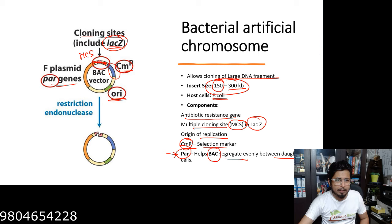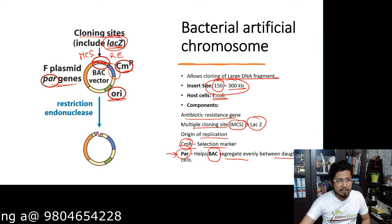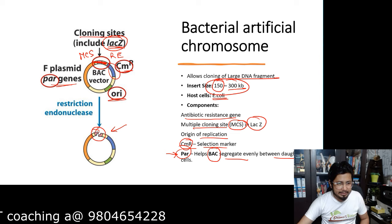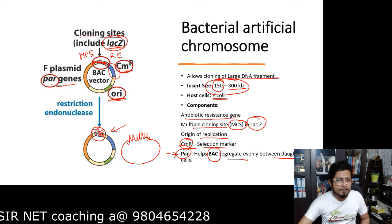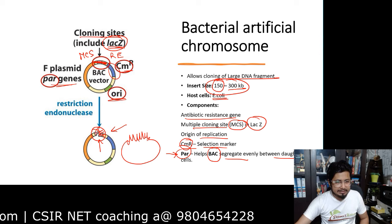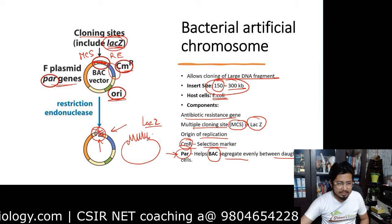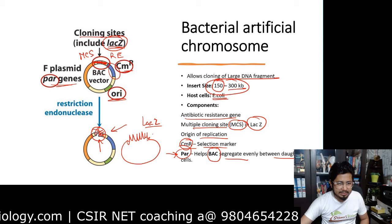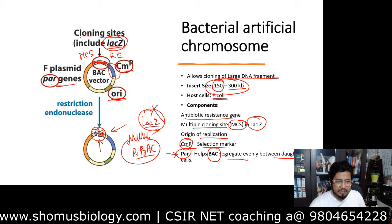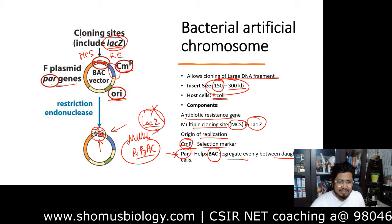At the Multiple Cloning Site, we use a restriction endonuclease to cleave the MCS, and then the target DNA is added in the center. This disrupts the lacZ gene — shown in red in the diagram — so the lacZ gene product will not be formed after target DNA insertion. This recombinant BAC has a destabilized lacZ gene, meaning the lacZ product will not be produced.